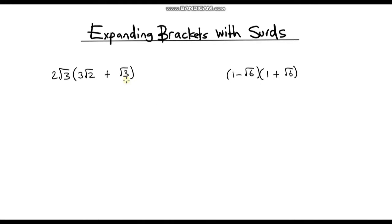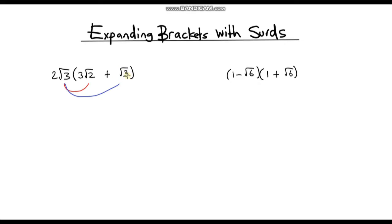So the first question: we've got 2√3 outside the brackets, and then inside the brackets we've got 3√2 plus √3. This 2√3 is being multiplied by everything inside the brackets. So we're going to first multiply it by 3√2, and then we're going to multiply it by √3.